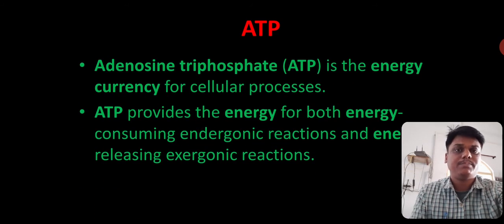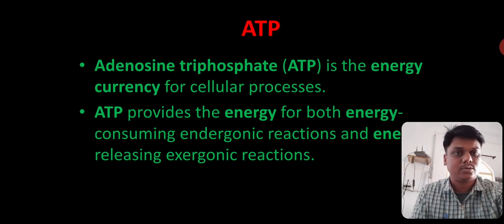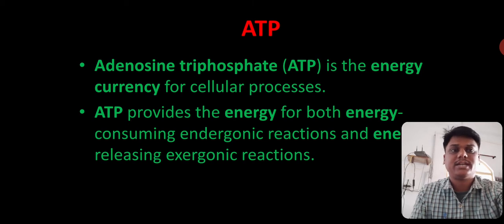Let's see what is the structure of ATP. ATP is adenosine triphosphate. It is also known as energy currency of the cell. ATP provides energy for both energy consuming endergonic reactions, as well as energy releasing, that is exergonic reactions.